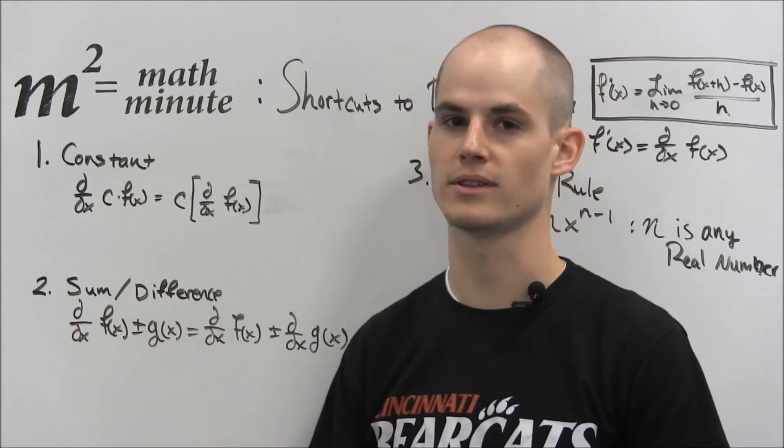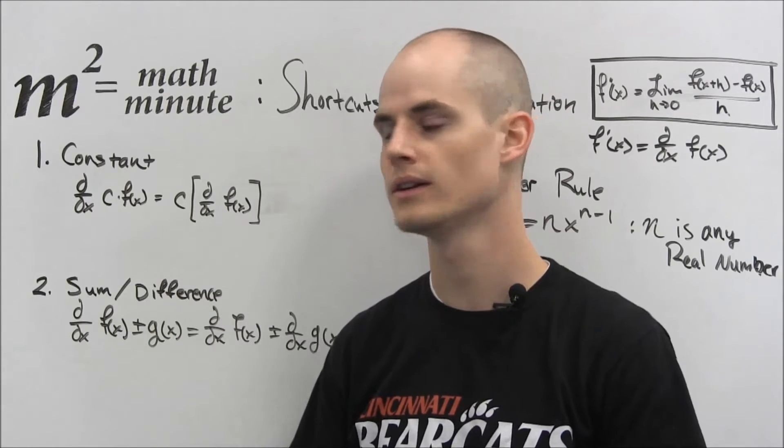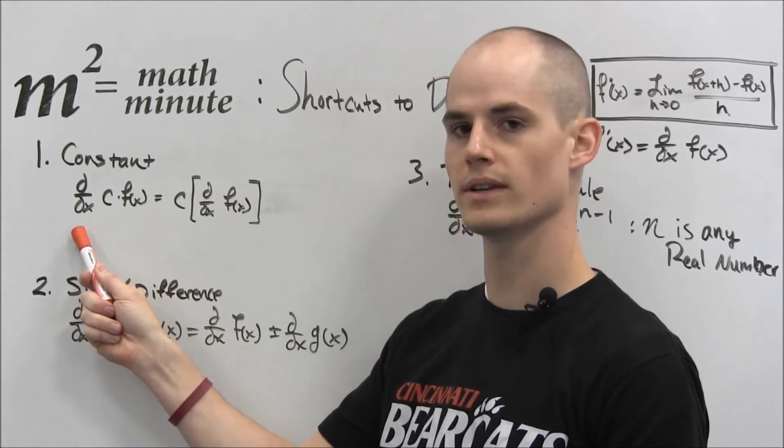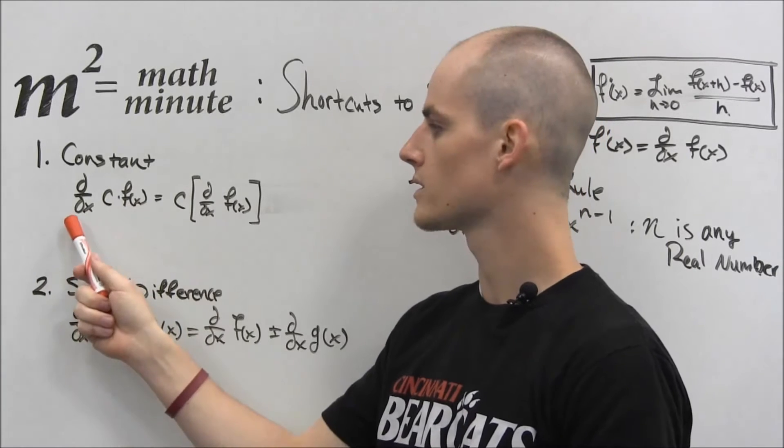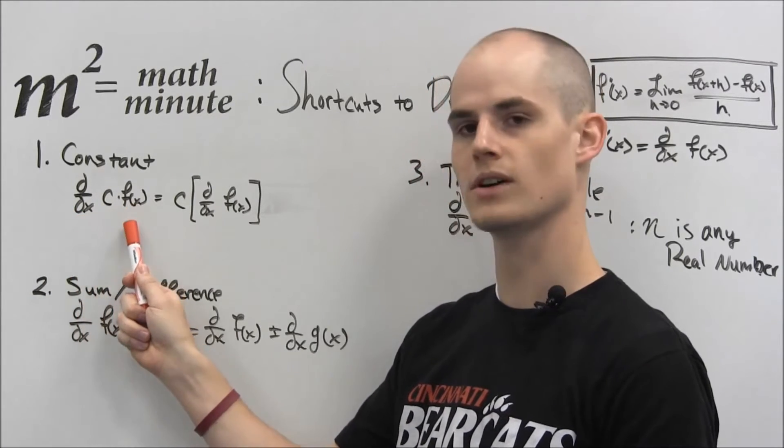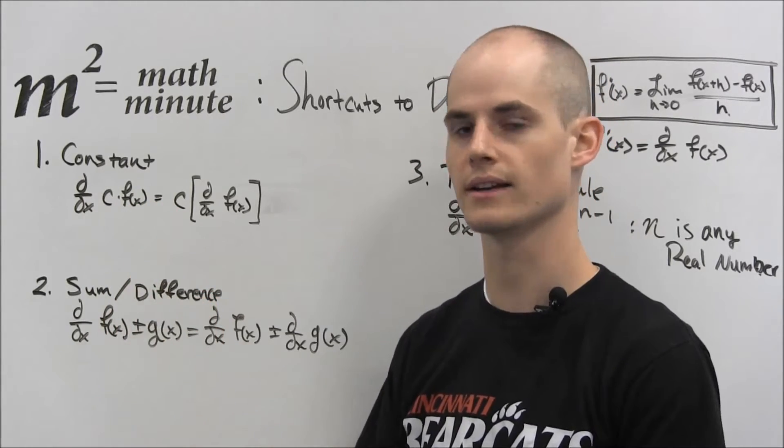This constant rule is very similar to the limit laws that we talked about in video 2. Now if you notice, this is almost identical, except this says take the derivative rather than limit. So what we can do is if we have the derivative of a constant times a function, we can take the constant out, worry about it later.